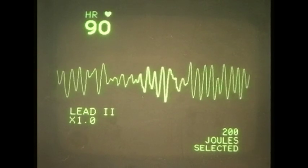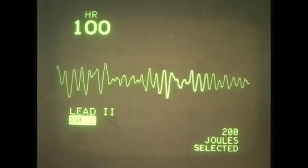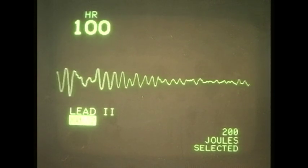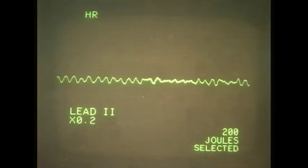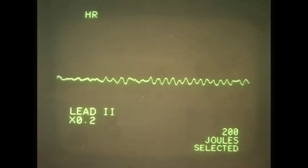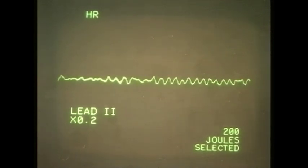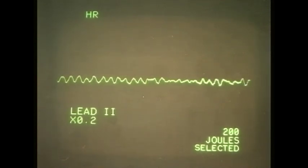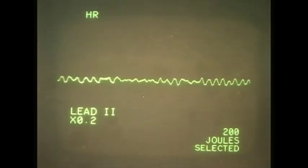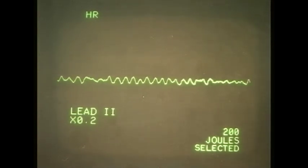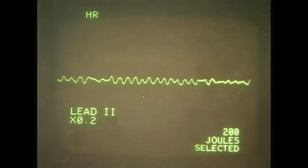As time goes on, what we may see is more of a fine VF. So obviously the amplitude starts to reduce. We still see the chaotic pattern, but the amplitude is much less. And this would need to be treated by defibrillation? By prompt defibrillation. Providing the patient was unconscious and pulseless? With ventricular fibrillation, most patients will be unconscious very quickly.